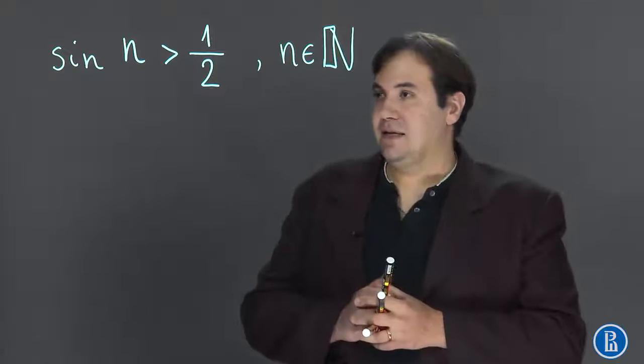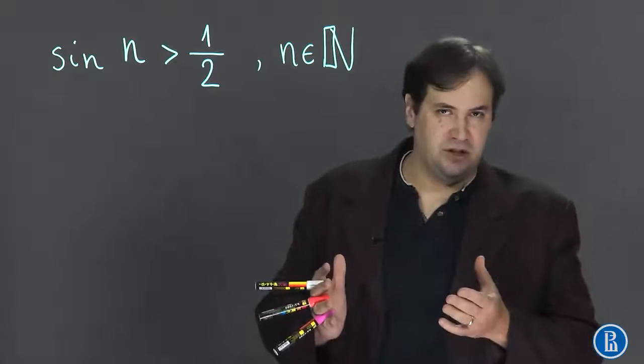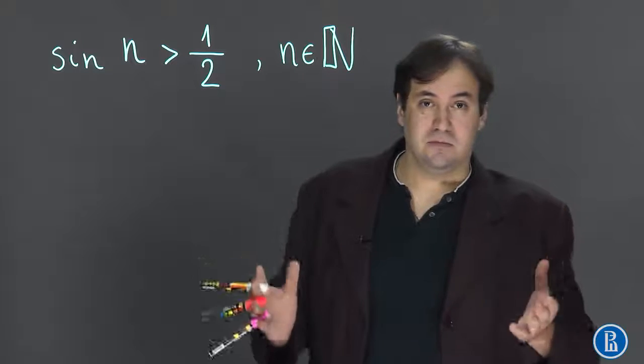Take a look at this inequality: sine h > 1/2, n ∈ N. Well, n is an integer. It's written here that it's a positive integer, but actually it doesn't matter. It can be any integer.